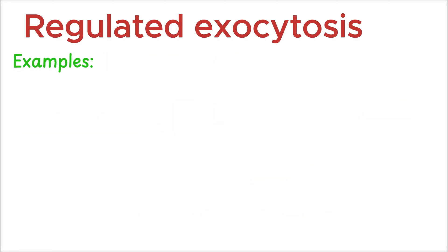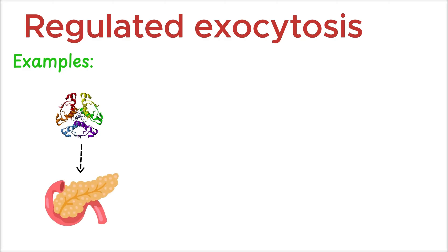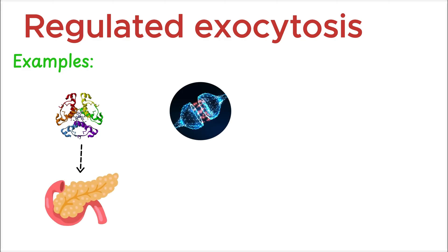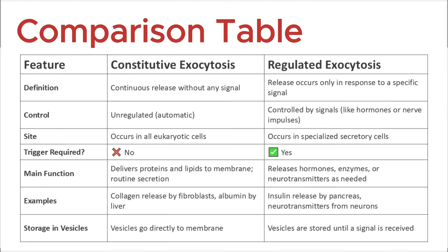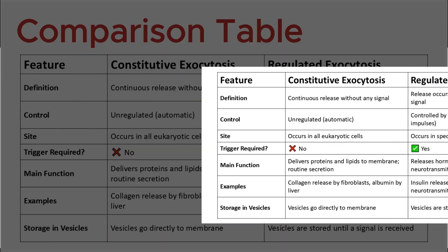Examples of regulated exocytosis include the release of insulin from pancreatic beta cells when blood sugar rises, release of neurotransmitters from neurons when a nerve signal arrives, and secretion of digestive enzymes by the pancreas during digestion. Here's a side-by-side comparison of both types — feel free to pause and take a screenshot for your study notes.